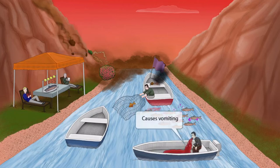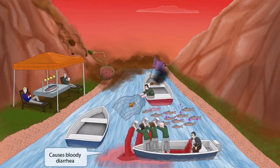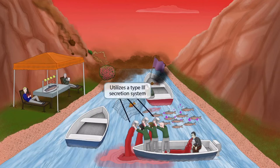Now let's turn our attention to the right side of the image, where we can see this guy vomiting — this should help you remember that Salmonella causes vomiting. His crew got worried they were going to sink, so they started using buckets to empty all of the vomit into the water. The red water is a symbol for bloody diarrhea, helping you remember that Salmonella causes bloody diarrhea. The crew of three, and the idea of secretion, should help you remember that Salmonella utilizes a type 3 secretion system.